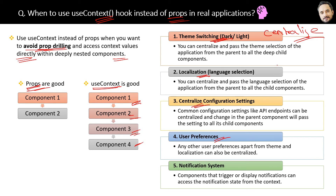For example, as a user when you select the dark theme for an application, then all the components of that website or application will be displayed in dark mode. That's the centralized nature of it — and the same applies to the other cases as well.